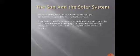The eight planets are Mercury, Venus, Earth, Mars, Jupiter, Saturn, Uranus and Neptune.